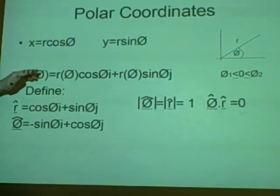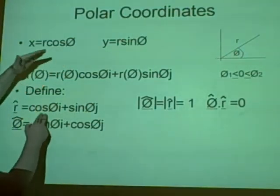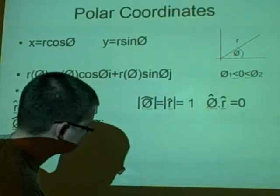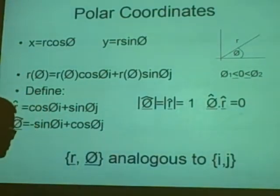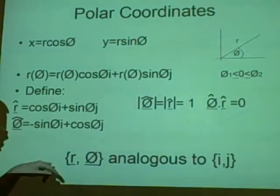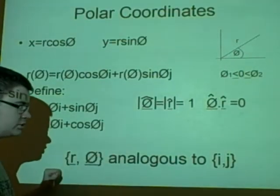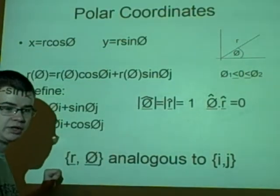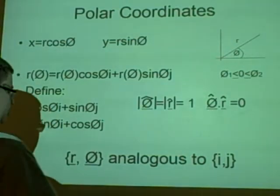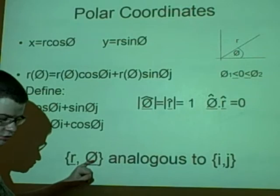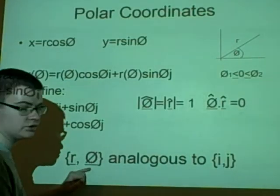We can also use these as they are analogous to i and j, which means they can be used to plot any points. But they are best because r and theta are not constant, which i and j always are.